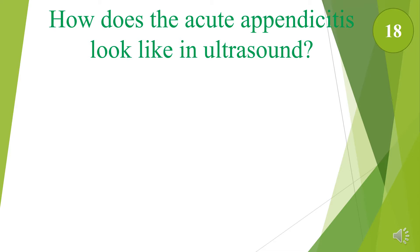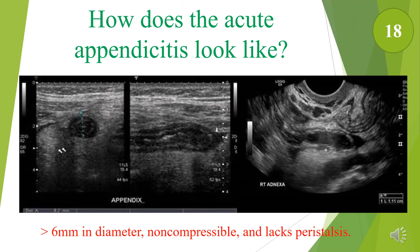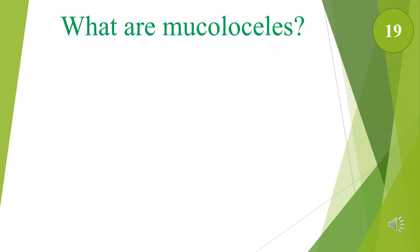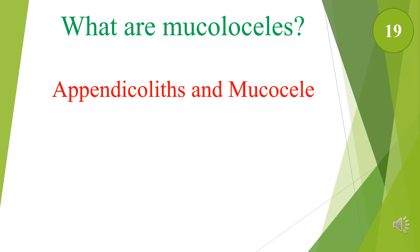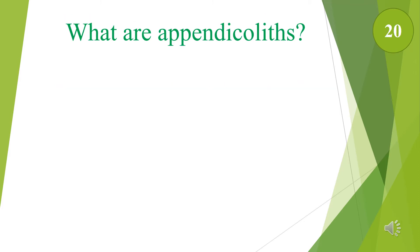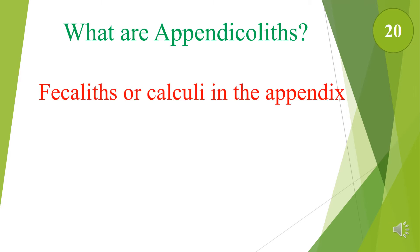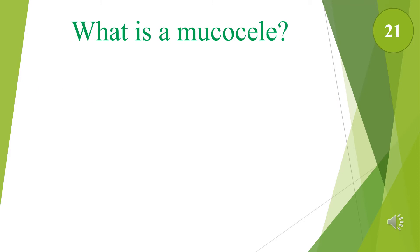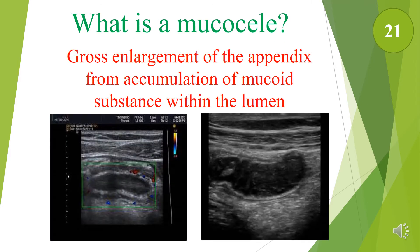How does acute appendicitis look in ultrasound? In ultrasound, acute appendicitis has greater than 6 mm in diameter, is non-compressible, and lacks peristalsis. What are appendicoliths and mucoceles? Appendicoliths are fecalites or calculi in the appendix. A mucocele is the enlargement of the appendix from accumulation of mucoid substance within the lumen.